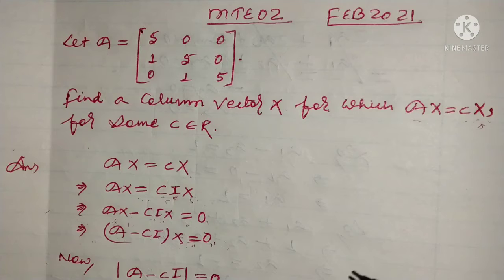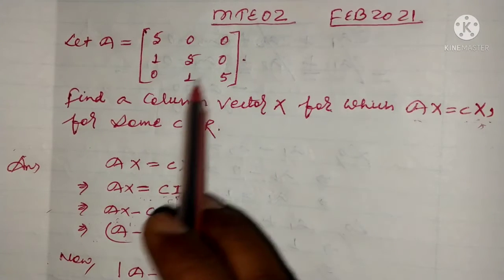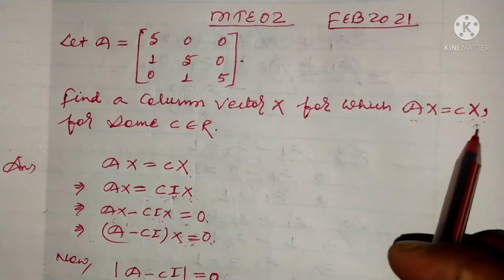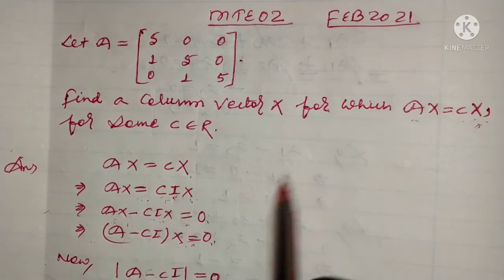I will show you the solution to the question. The question is: let A be the given matrix, find a column vector X for which AX is equal to cX for some c belongs to R.